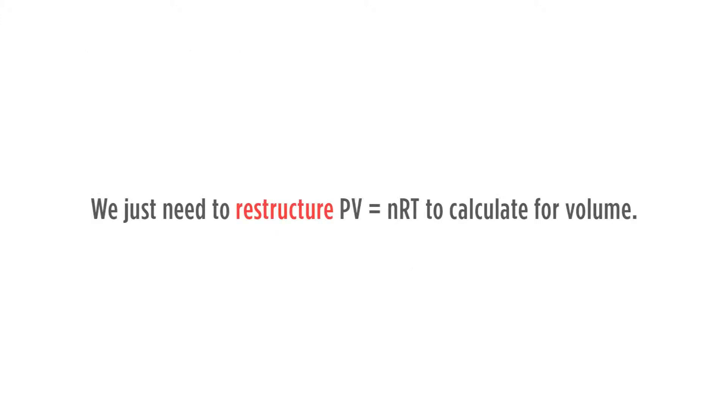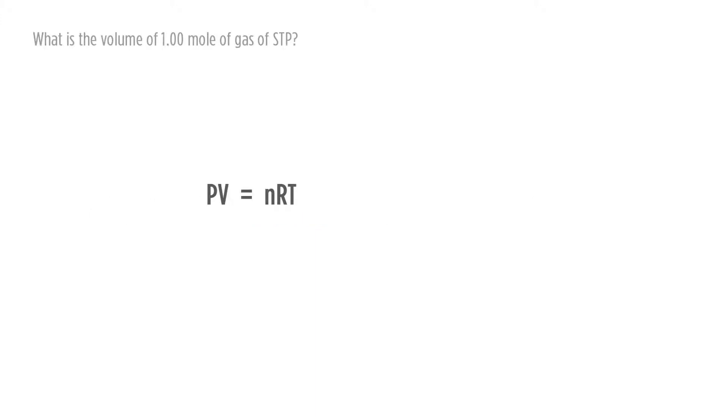Once we have this, then we just need to restructure PV equals nRT to calculate for volume. So if we look at PV equals nRT, we want to get volume by itself. Therefore, we're going to divide through by P. We cancel out our P's, leaving volume by itself. So volume is going to equal nRT over P.